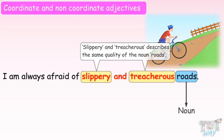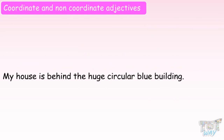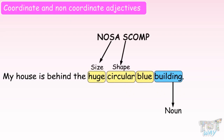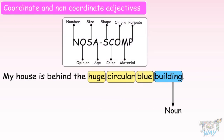Here we have another example: 'My house is behind the huge circular blue building.' Here we have three adjectives — huge, circular, blue — describing the noun 'building.' All three describe different qualities: huge is describing the size, circular is describing the shape, and blue is describing the color of the noun building. So these are non-coordinate adjectives, and you need no commas or any coordinating conjunction between them. But you do need to follow the right sequence according to the formula NOSA SKOMP.